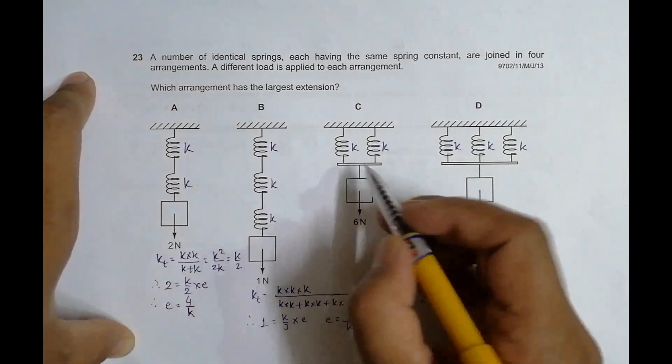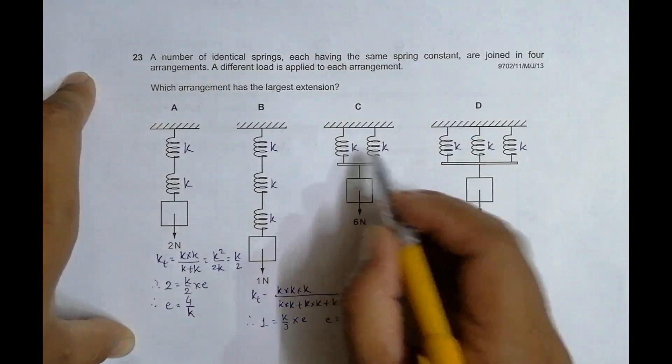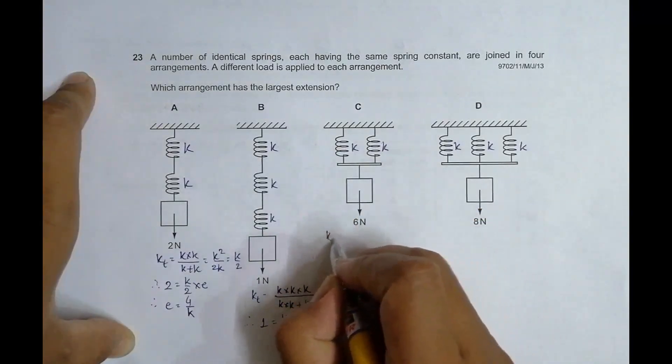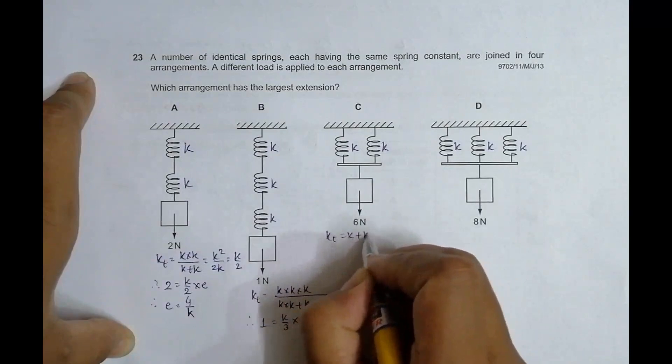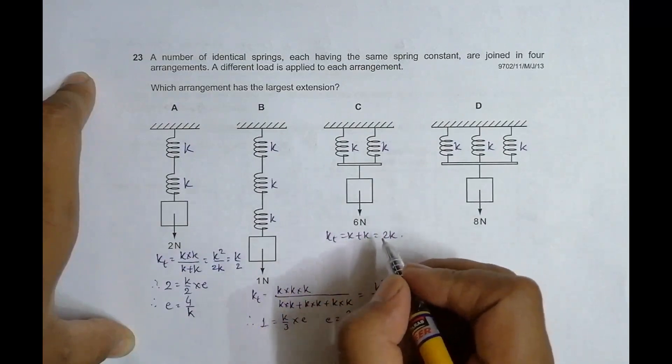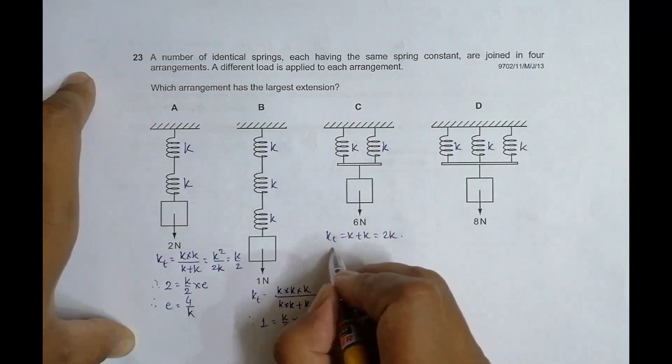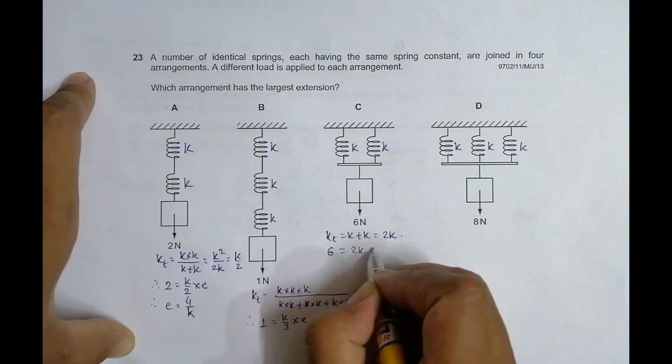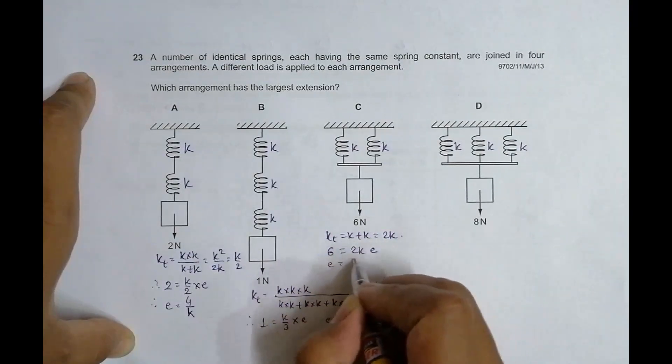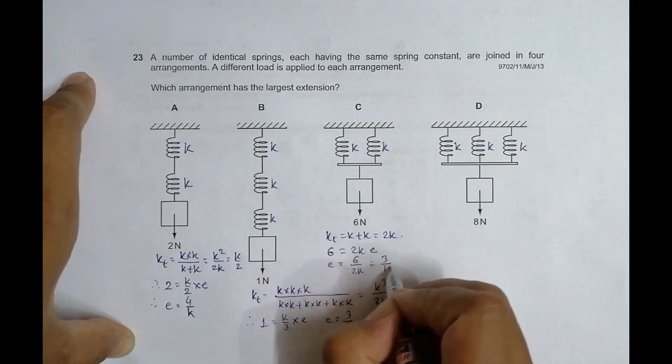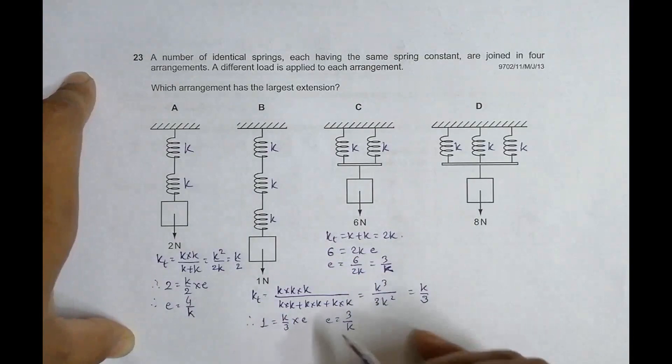In arrangement C, the two springs are in parallel, so K total equals K plus K equal to 2K. Using the force equation, force equals 6 Newtons equals 2K into E, so E equals 6 by 2K equal to 3 by K. The value of extension here is same as arrangement B.